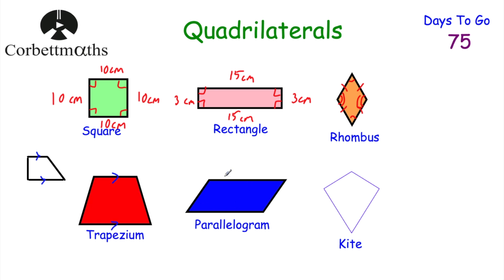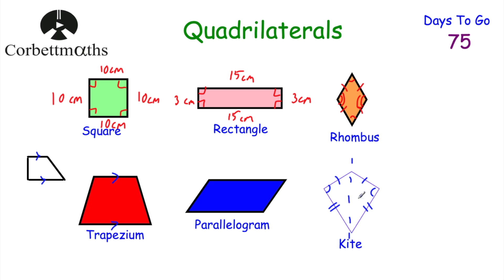A parallelogram is like a pushed-over rectangle. The opposite sides are the same length — top the same as bottom, left the same as right — and the opposite angles are equal. It has no lines of symmetry and rotational symmetry of order two. A kite has two pairs of adjacent sides of equal length and one pair of equal angles. It has one line of symmetry — a vertical line — and rotational symmetry of order one.